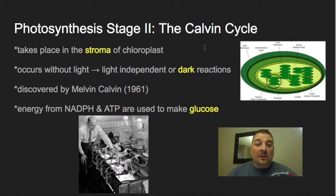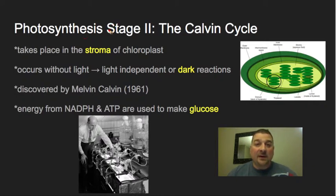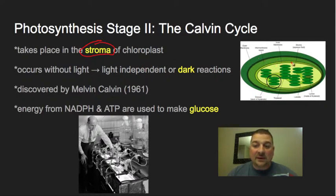This video covers the final stage of photosynthesis called the Calvin cycle. We've gone through the light reactions where solar energy was harnessed and stored as NADPH and ATP. This next step happens inside the stroma of the chloroplast — that fluidy portion — whereas the light reactions happened in the membranes of the thylakoids. The Calvin cycle occurs without light.